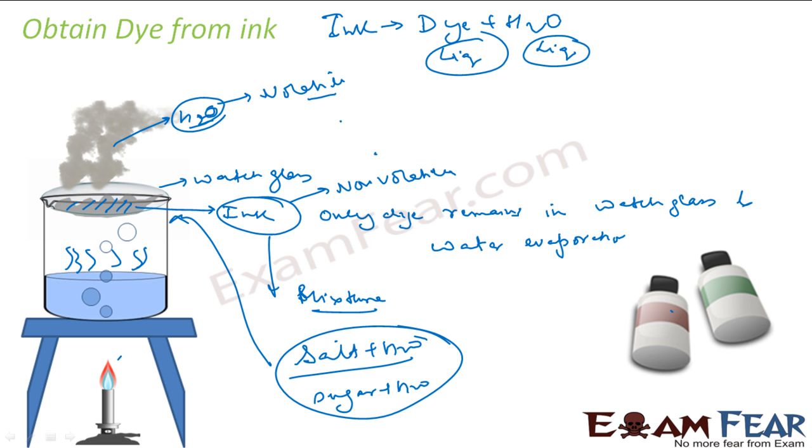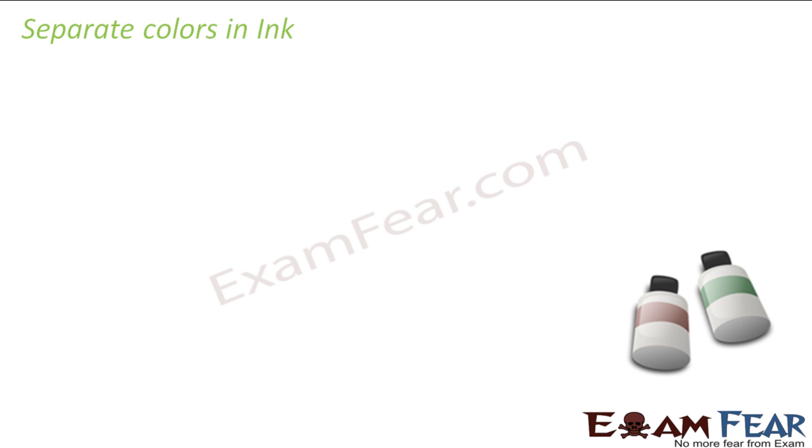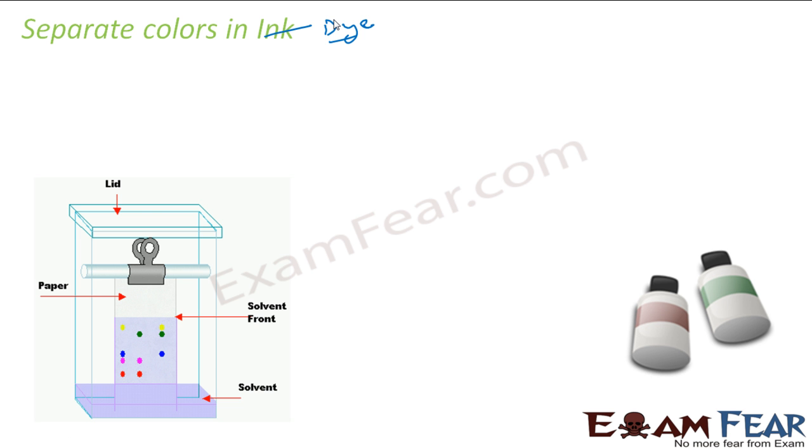Now as I told, the ink itself has multiple colors. Let's see how can we separate the colors of the inks. The dye we obtain from the ink. Or I can say separate the colors of dye. Or ink as well because again ink is nothing but the diluted form of dye. So what we can do, we can have an apparatus like this. So here we are trying to separate the color of ink.